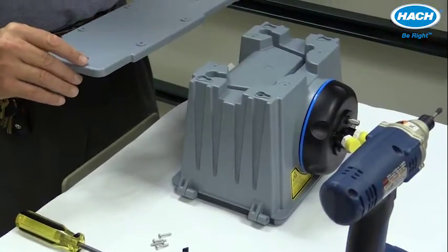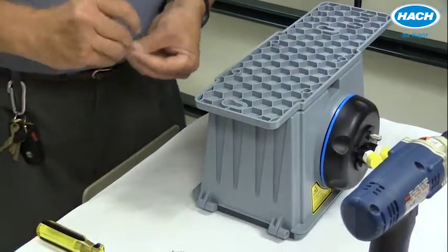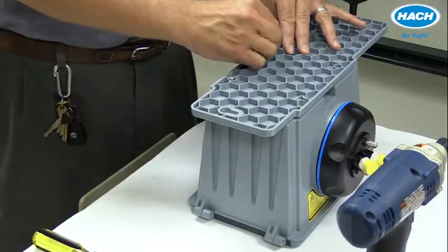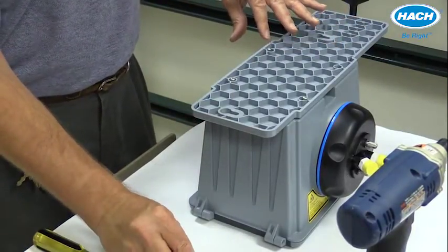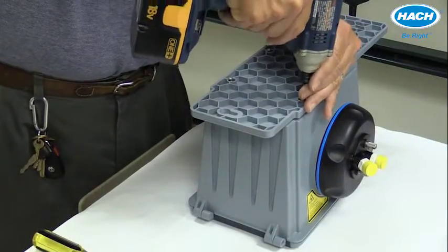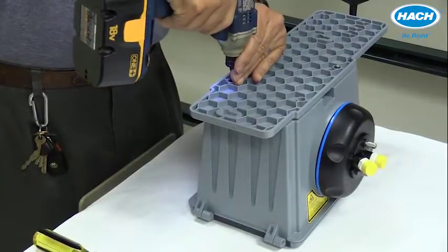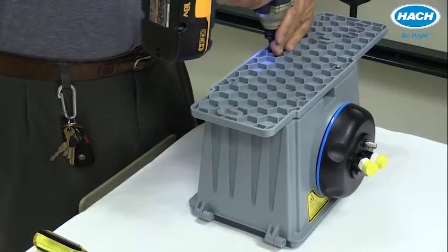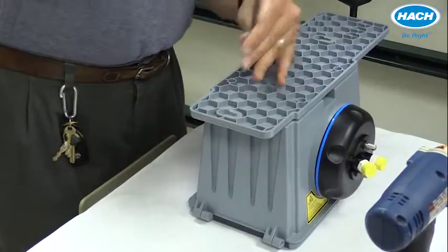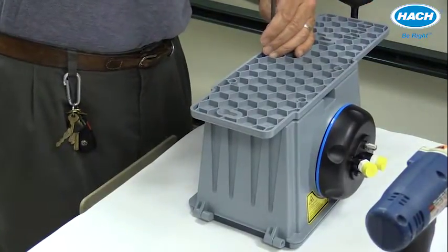Mount the bracket to the back of the TU5300 or 5400 using the screws included with the bracket. Tighten them down manually with just a Phillips screwdriver. It's just that easy.